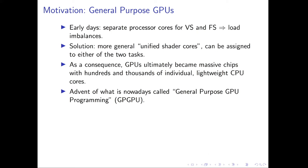This eventually led to people performing physics simulation and other types of simulation on the GPU. And that again led to vendors like Nvidia and ATI recognizing that people were using their processors not only for graphics processing but also for high-performance computing. The vendors then developed specific APIs devoted to what is nowadays called general-purpose GPU computing, or GPU programming — in short, GPGPU.